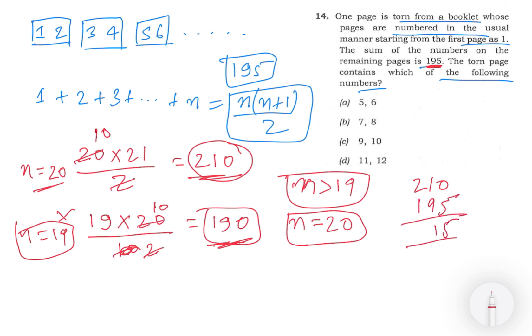This means that one page has been torn, and the sum of numbers on that page should be 15. In the first page there is 1. In the second, we have 2. So this is 7 and this is 8. This means exactly 15.